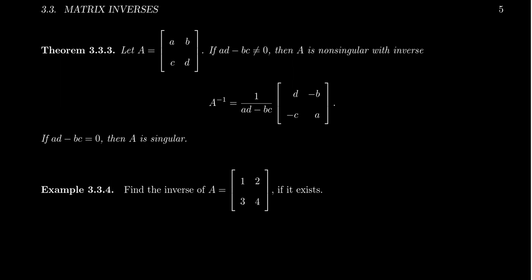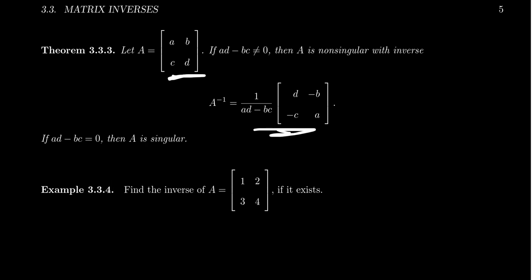If the matrix is non-singular, the determinant will be non-zero. You're going to divide by the determinant, but you also have to rearrange the entries a bit. The numbers on the main diagonal swap places: A becomes D and D becomes A. The off-diagonal entries B and C each get a negative sign in front of them. This is a formula to memorize, and you can verify it works by multiplying A by this proposed inverse and confirming you get the identity matrix I₂.